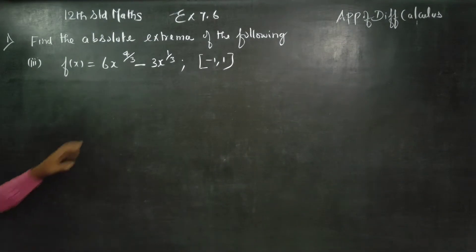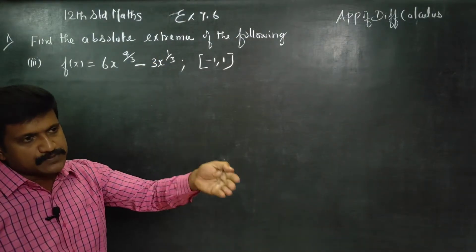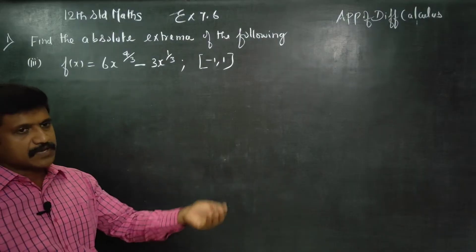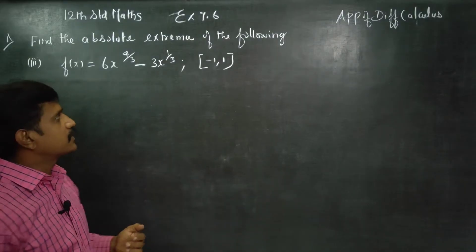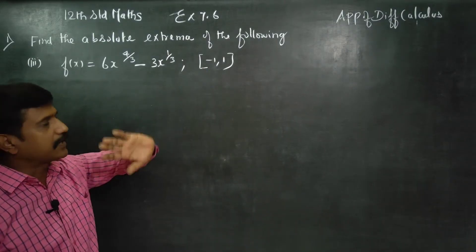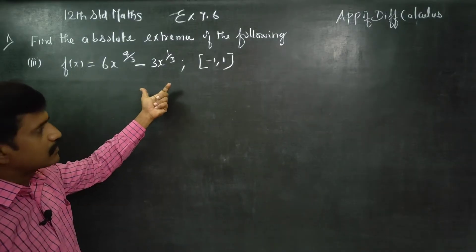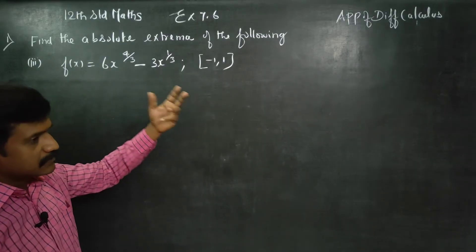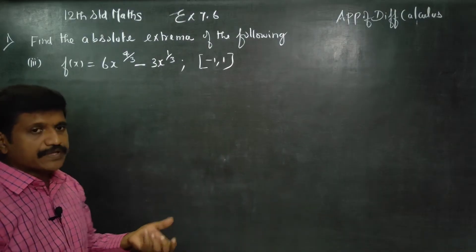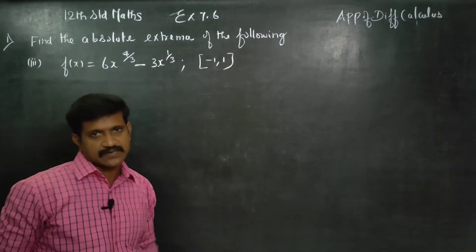First of all, absolute extrema means absolute maxima and absolute minima are being asked. To find these, first we find the critical points. On a continuous curve, we differentiate and set it equal to zero to get the x values — those are the critical numbers.